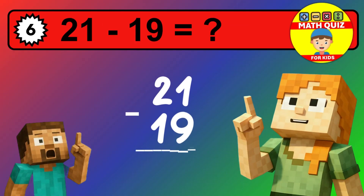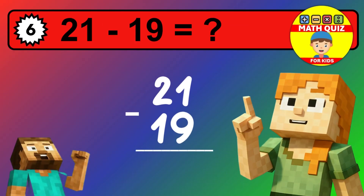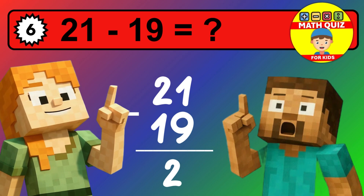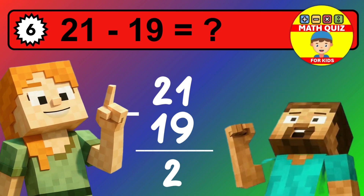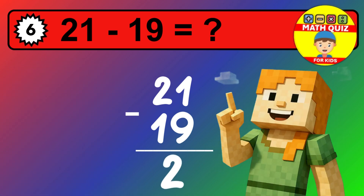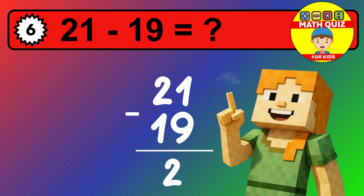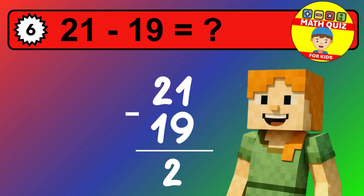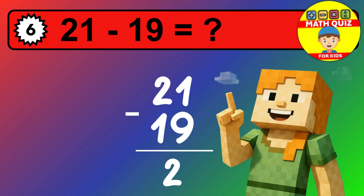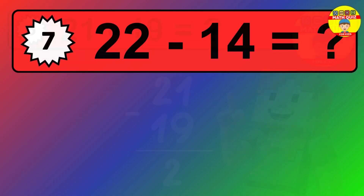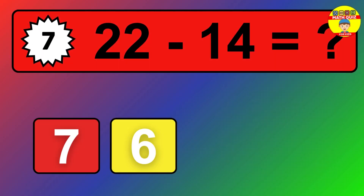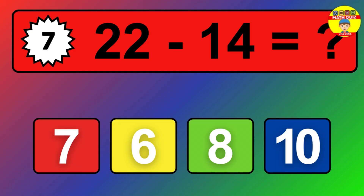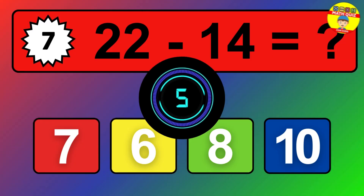We start with the units. 0 minus 7 is not possible, so we need to regroup. We take one 10 from the tens column. Now we have two tens, and the units become 10. Now we subtract. 10 minus 7 is 3. Then we go to the tens. 2 minus 2 is 0. The final answer is 3.